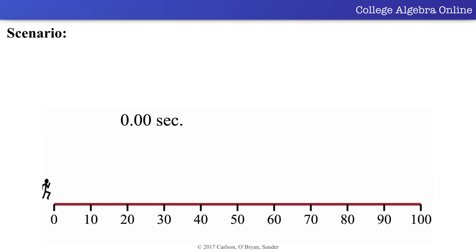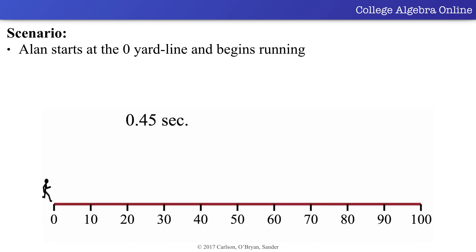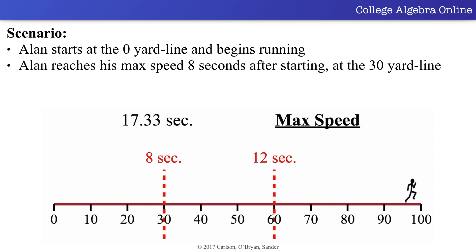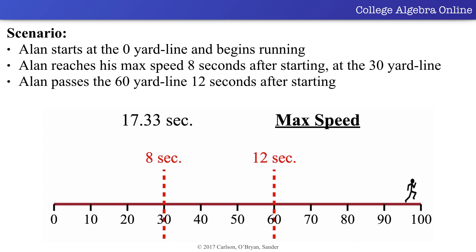Recall the following scenario. Allen and Grant are on a grass field that has lines painted on the ground every 10 yards, and Allen wants to see how fast he can run. Allen starts at the zero yard line and begins running. Eight seconds after he starts running, Allen is running at his max speed, at which point he is at the 30 yard line. He runs at this max speed until he reaches the other side of the field. He reaches the 60 yard line 12 seconds after he started running.